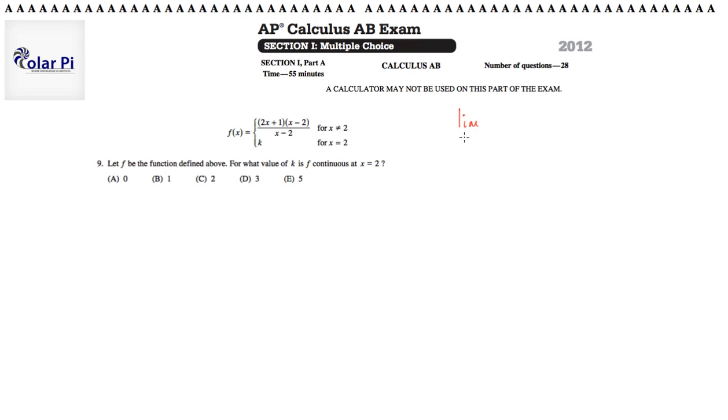So limit as x goes to a of f of x must equal f of a for a function to be continuous at x equals a. And if this is true for every a in the domain of f, then we say that the function is continuous in its domain, in all of its domain.